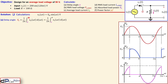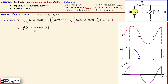The integration goes from alpha to π. Since the output voltage equals the input voltage over that interval, we substitute the same expression. Taking Vm out of the integral and integrating sine(ωt) gives us a general expression. Substituting the limits — π gives cosine(π) = −1, so minus(−1) = +1, and then minus cosine(alpha) — we get the general expression: Vo = (Vm / 2π) · (1 + cos α). This is the general formula for the half wave rectifier in this controlled configuration.